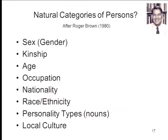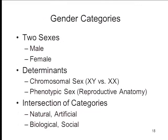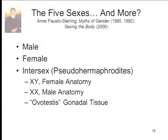Roger Brown came up with a list of what he called the natural categories of persons, ranging from categories based on sex and kinship to categories based on nationality, race, and ethnicity. Starting with gender categories — which seems the most obvious — there are two kinds of people, male and female, determined by chromosomal or phenotypic sex. But this turns out to be a really interesting intersection between a natural category based on reproductive anatomy and a more social category where being male or female carries a lot of extra meaning. There might be more than two sexes: people genetically male but phenotypically female, people genetically female but phenotypically male, and people with both kinds of gonadal tissue. Biologist Fausto-Sterling at Boston College has argued we actually have five sexes.